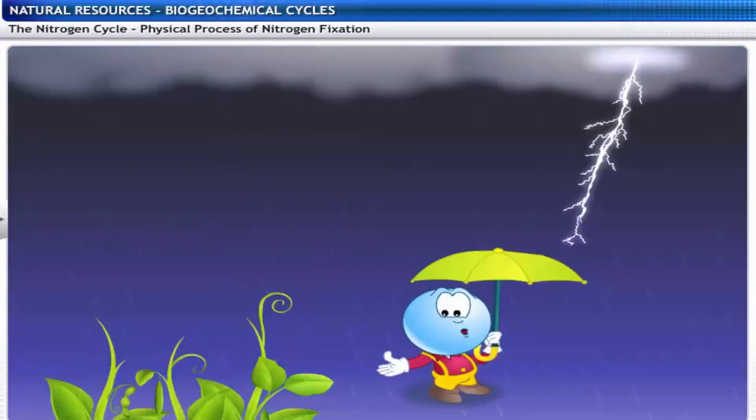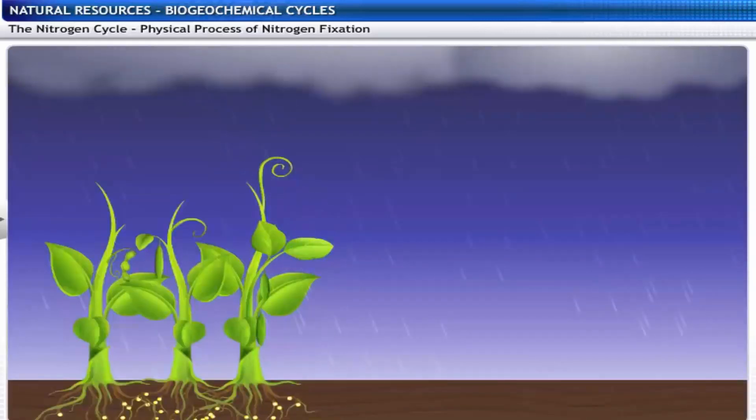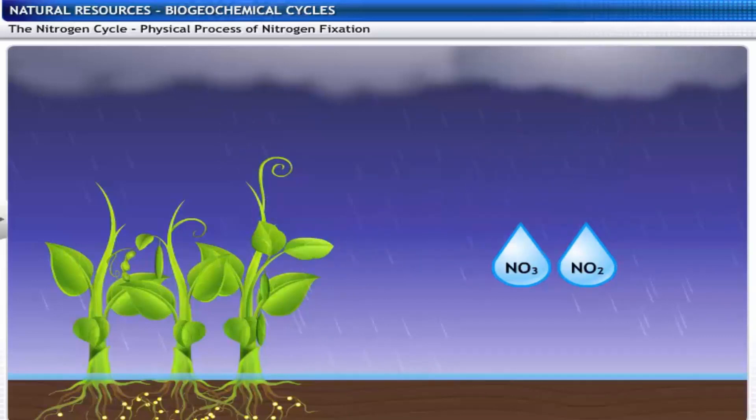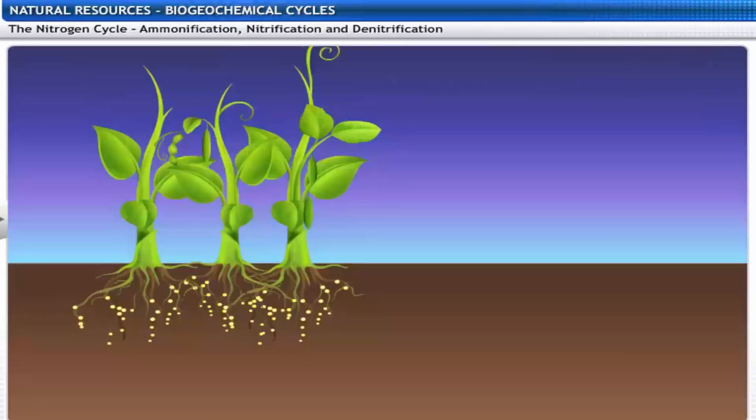That was the biological process of nitrogen fixation. Did you know that lightning plays an important role in nitrogen fixation? Surprised? Let's see how. When lightning occurs, the high temperature and pressure combine nitrogen and water to form nitrates and nitrites. These compounds dissolve in water and are readily used by plants. Now that nitrogen is taken up by the plants, it is used to make proteins.